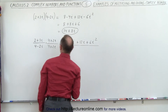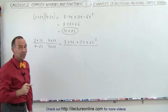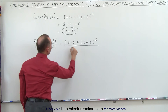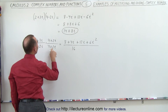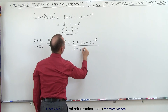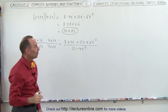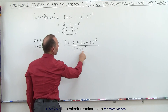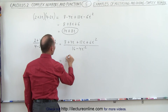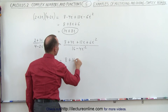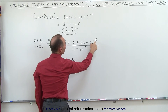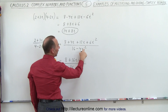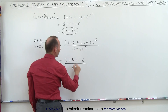Now we divide that by the product of the two denominator terms. Since it's 4 plus 2i and 4 minus 2i, the middle terms disappear. We get 4 times 4, which is 16, and negative 2i times positive 2i, which is negative 4i squared. We simplify by converting i squared to negative 1 in the numerator and the denominator. So the denominator becomes 16, and since i squared is negative 1, negative 1 times negative 4 is a positive 4.